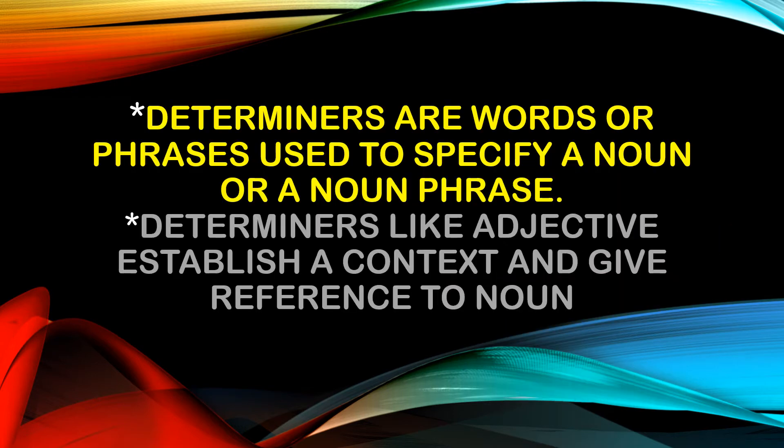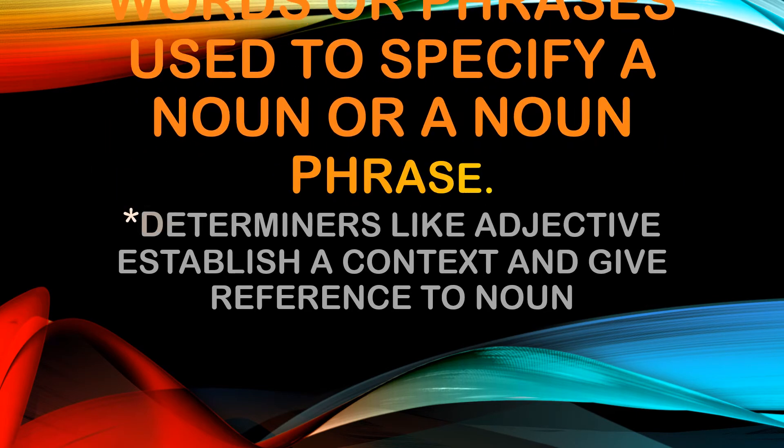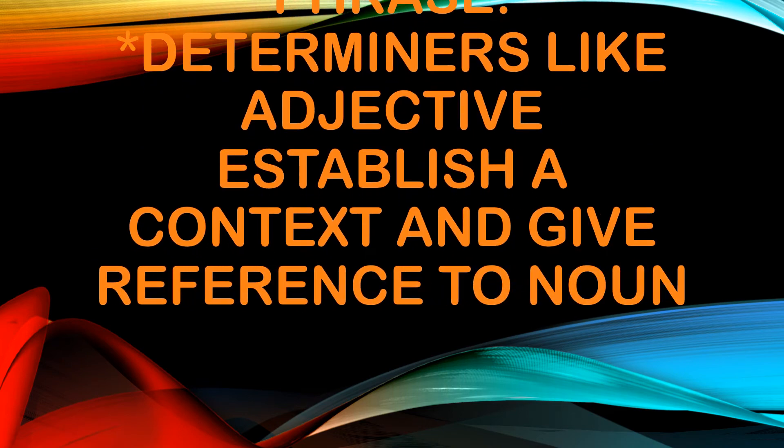So what are these? This is the definition: determiners are words or phrases used to specify a noun or a noun phrase. Determiners, like adjectives, establish a context and give a particular reference to a noun. So determiners are mostly used to give a specific place to a noun.